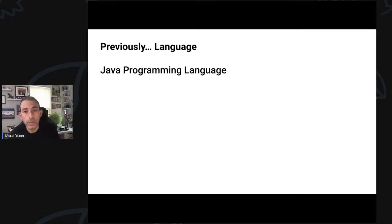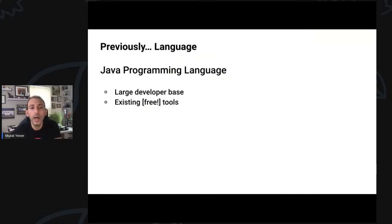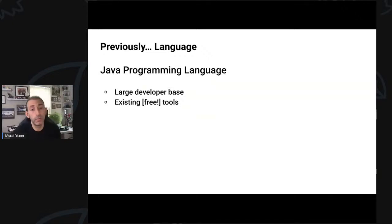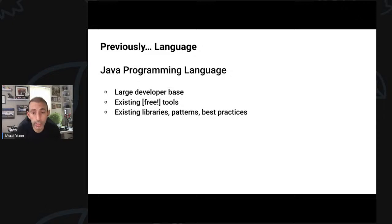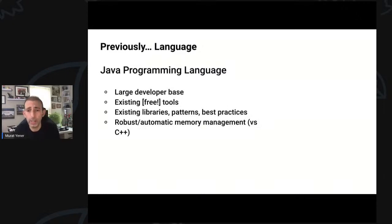First, of course, the language. It was a very good decision to start with Java programming language because it had a very large developer base. Java programming language had a huge developer base, which meant it had a lot of libraries, open source projects, patterns, best practices, tutorials, and stuff. Compared to other languages, it had its own memory management. So it was way easier and safer to write code and apps with Java.